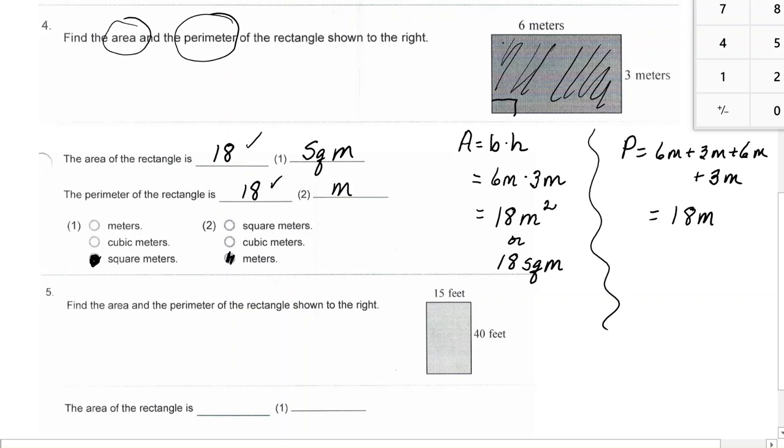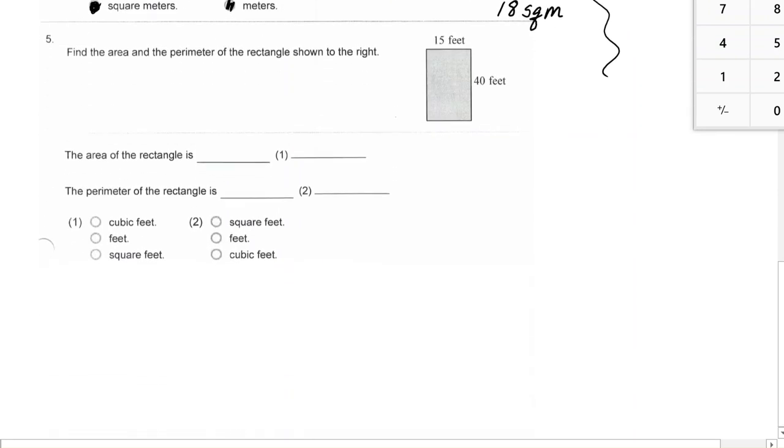The other one says if you took it and you unfolded this line, stretched it out like it was a string, it would be exactly 18 meters long. Now, you'll see that these two numbers are not going to usually be the same. The units are definitely not the same. Let's look at number 5.